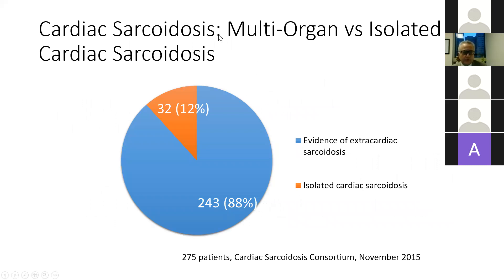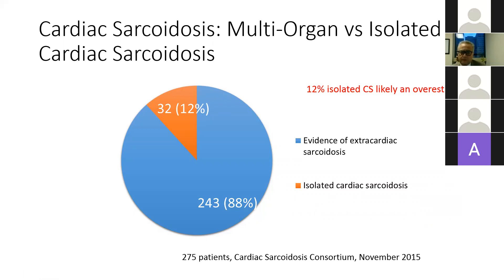From the cardiac sarcoidosis registry, an abstract in 2015 found that 12% of patients had isolated cardiac sarcoidosis — patients who met other criteria including biopsy. However, some of these may not have true cardiac sarcoidosis; they could have other cardiomyopathies or spuriously positive PET scans. So 12% may be an overestimate. Notably, even if a PET scan only lights up in the heart, transbronchial biopsy and lavage is often positive even without visible hilar or mediastinal lymphadenopathy on CT scan.